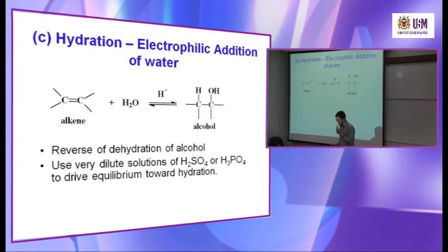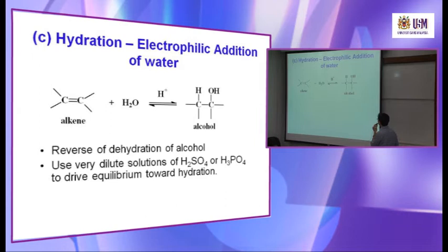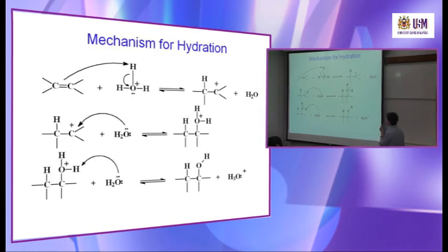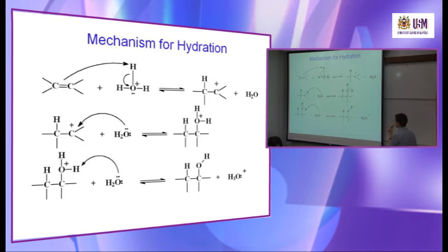So we are going to proceed with hydration — the electrophilic addition of water. This one also we studied before; I hope you can work out the mechanism on your own. This is a Markovnikov product. The mechanism: the double bond attacks the acid. You can draw the acid as H₃O⁺, or you can just write H⁺. Then the H attaches to the less substituted carbon, forming a carbocation — a more substituted carbocation. Then water acts as a nucleophile, attacks the carbocation, forming another water molecule with a positive charge. Then removal of the H from the water by another water molecule, and you get a hydroxyl group added — the water added into it.